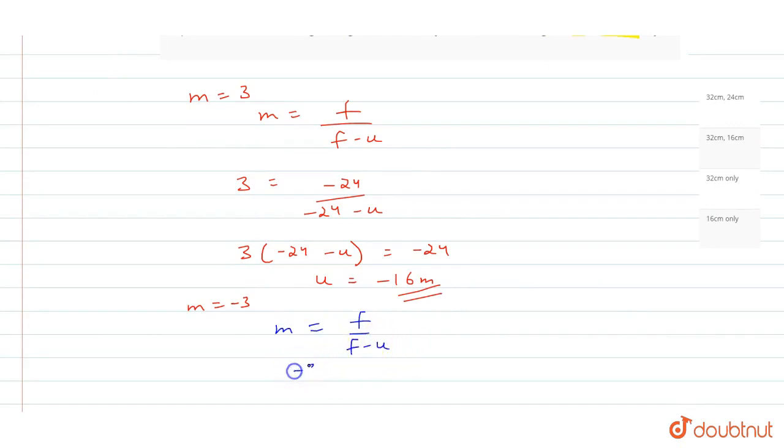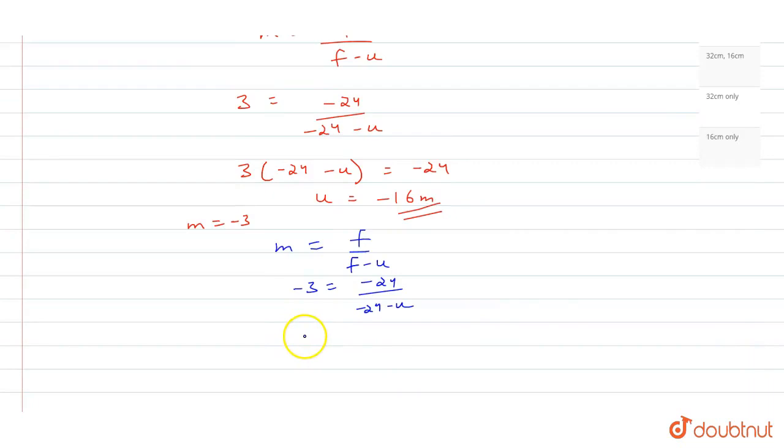Minus 3 is equal to f, that is minus 24 upon minus 24 minus u. So what u will come to solve, that will be minus 32 cm.